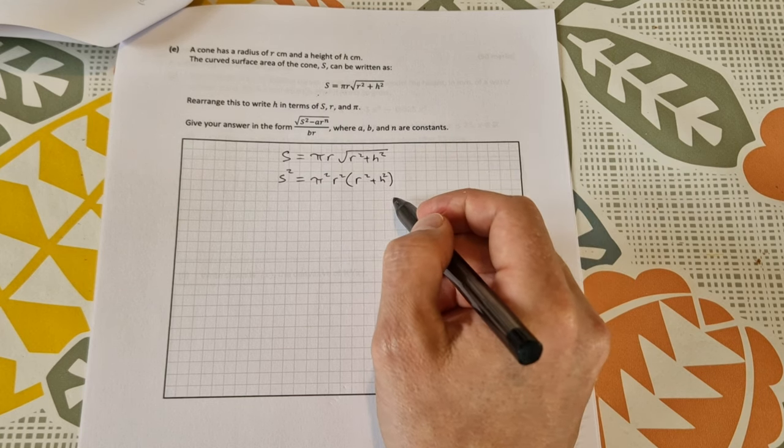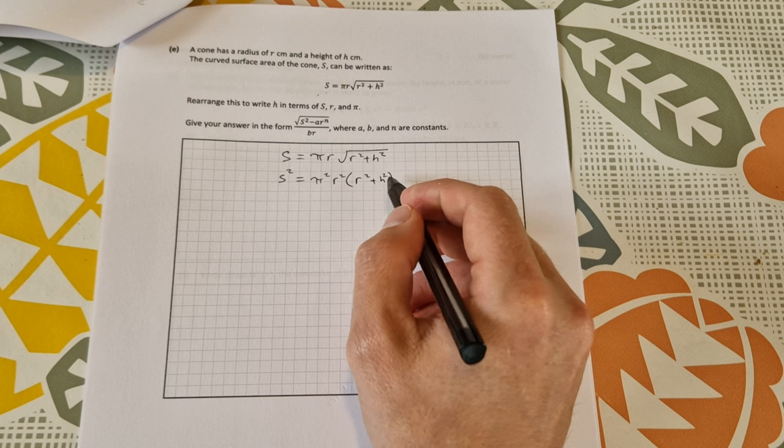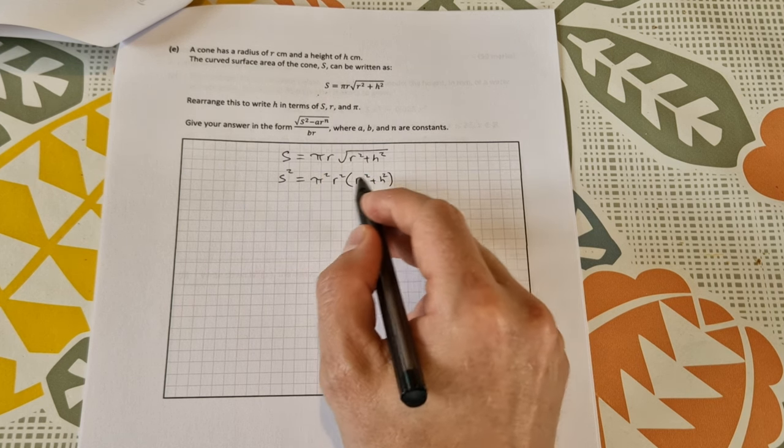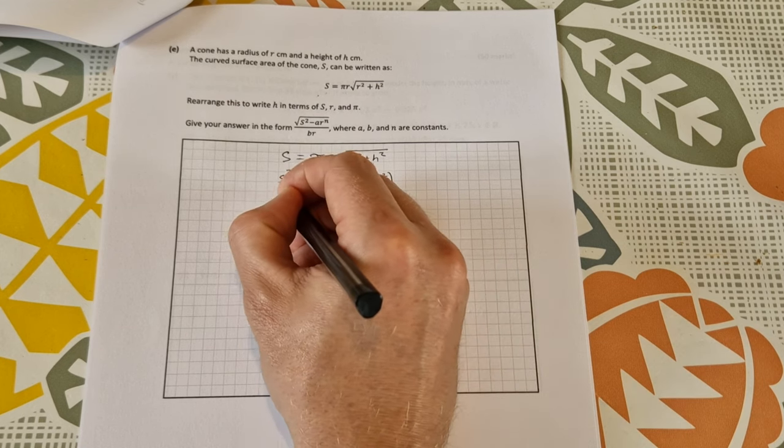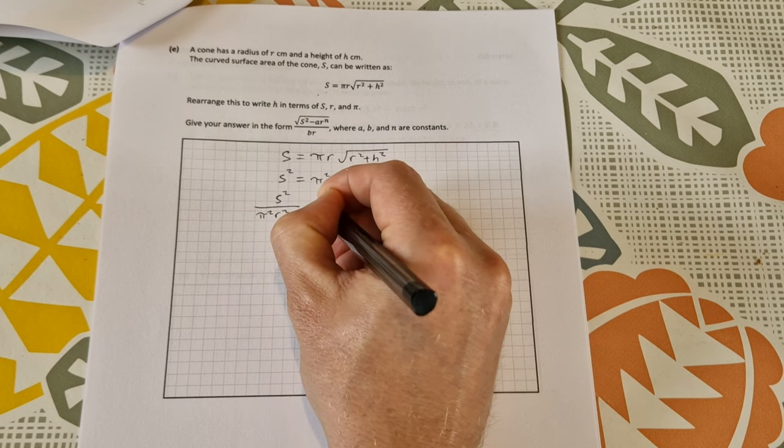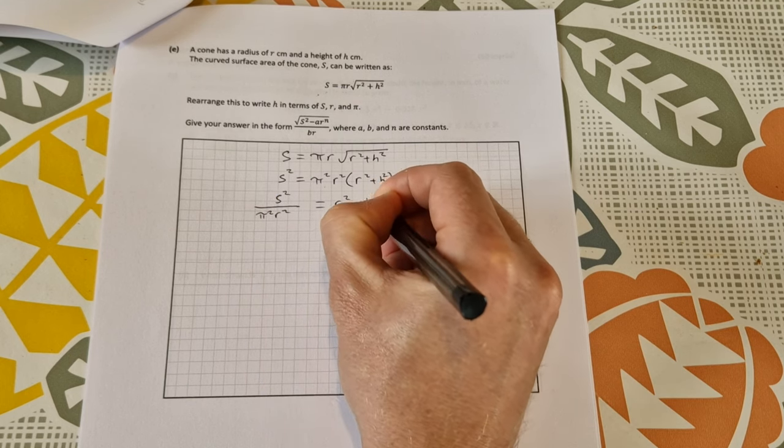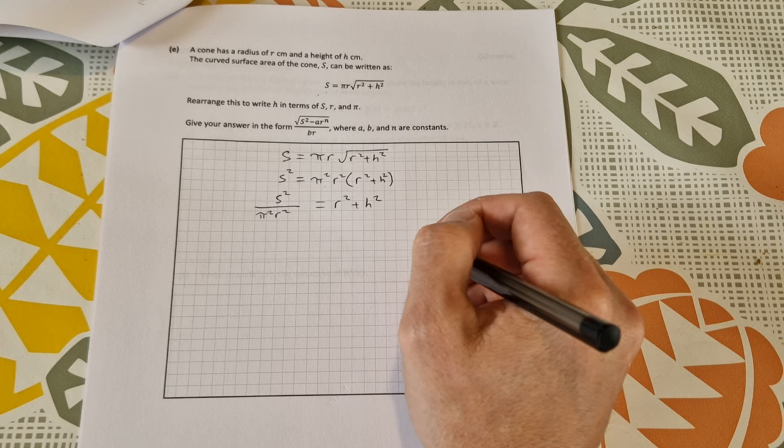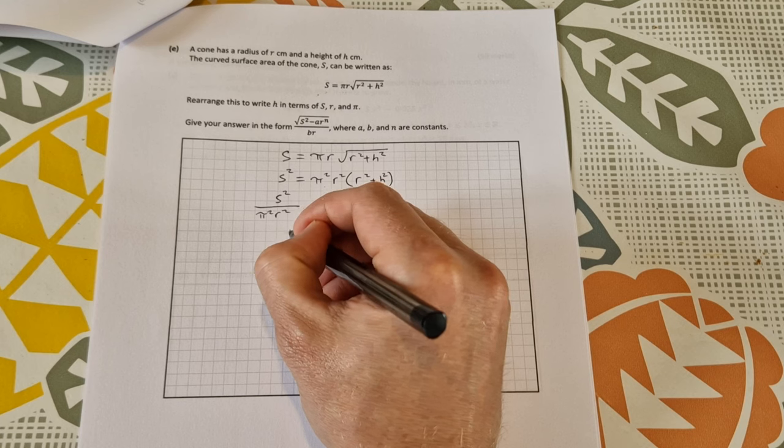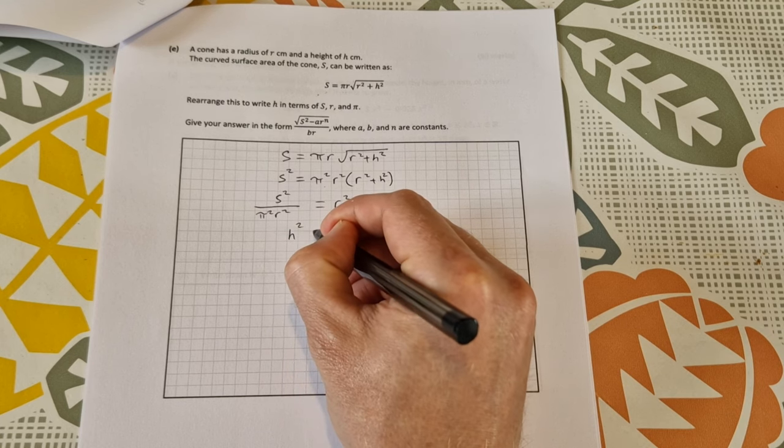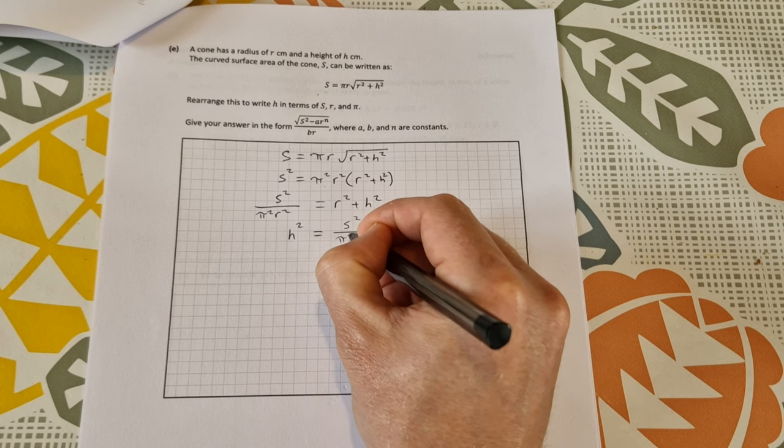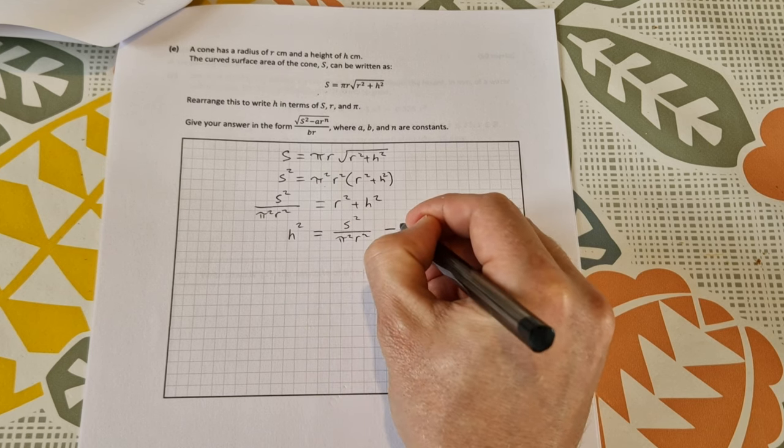Next thing then that I'm going to do is try to get h on its own. Here's h. So divide by pi squared r squared. So s squared over pi squared r squared is equal to r squared plus h squared. And then take away r squared from both sides and get h squared on its own. I'm just going to put h on this side and work on the right hand side. So h squared is equal to s squared over pi squared r squared and then minus r squared.